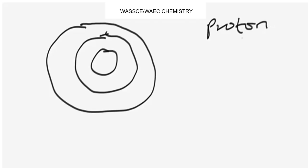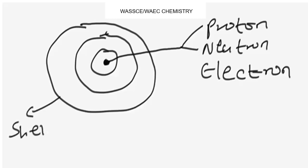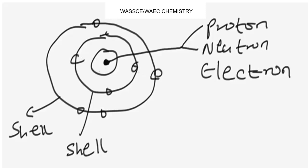We have the proton, we have the neutron, and we have the electron. The protons and the neutrons are found within the nucleus of the atom. This is where you find the proton and the neutron. The electrons revolve around the shell of the atom — we call this the shell of an atom. So these are the electrons.